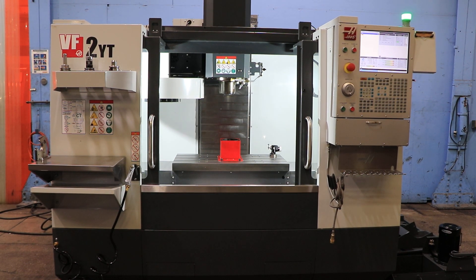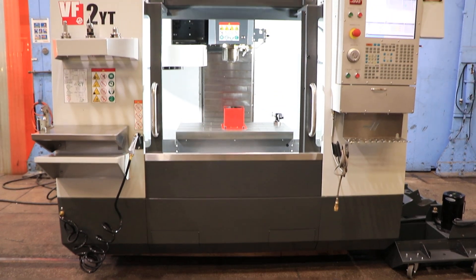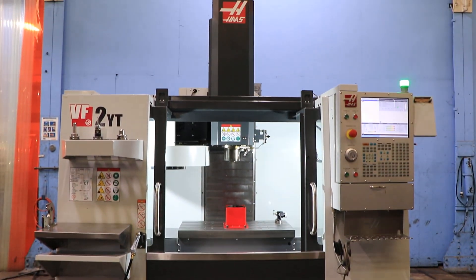We have a Haas Vertical Machining Center model VF2YT, serial number 1108503. This machine was new in 2019 and we're gonna run it for you.